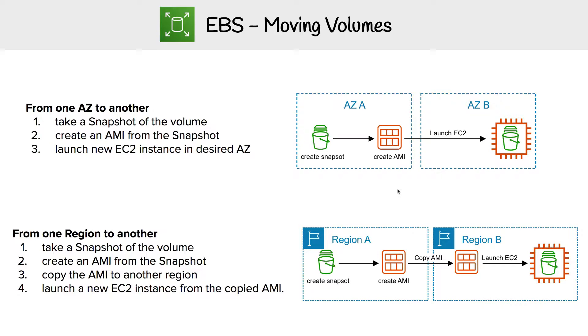We're going to use that copy AMI command into region B, and then we're going to launch that EC2 instance. And that's how we get our volumes from one region to another.